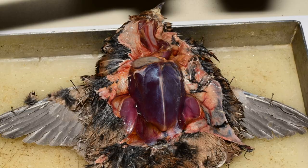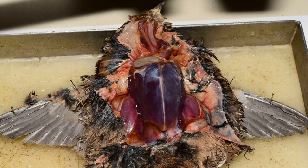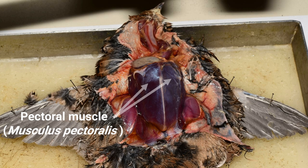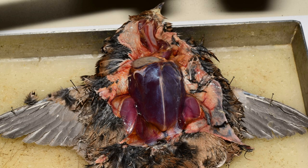The powerful pectoralis chest muscle rests on the sternum. These muscles pull the wing down. The supracoracoideus, which raises the wing, sits dorsal to the pectoralis, and is thus currently hidden. In addition, the sternum and the crop are now recognizable.